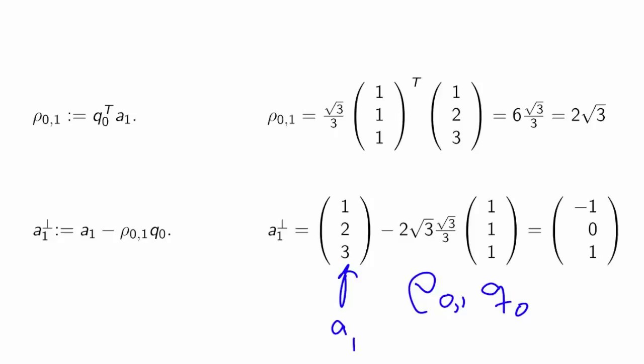We subtract off rho 0,1 times q0. Now, it's convenient that this square root of 3 times that square root of 3 is 3, so that this simply becomes minus 2 times the vector 1, 1, 1. And if you work through it, you end up with this vector minus 1, 0, 1.